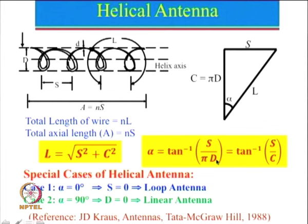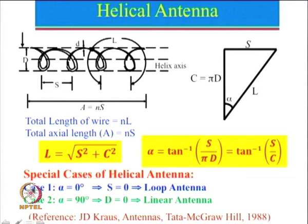That gives rise to a very interesting characteristic. The linear antenna is in this direction and the loop antenna is in the direction perpendicular to it. Hence we will see later on that the axial mode, which is in this particular direction, gives rise to a circularly polarized component under certain conditions.